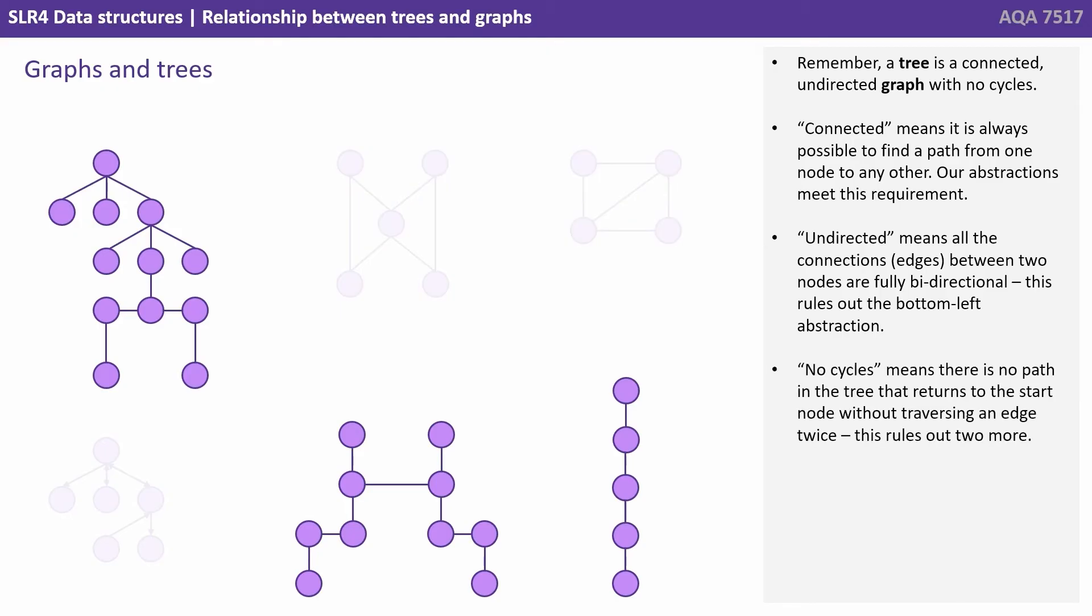And no cycles means there is no path in the tree that returns to the start node without traversing an edge twice, and this rules out two more of our abstractions.